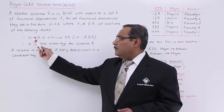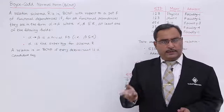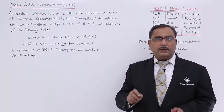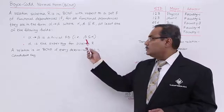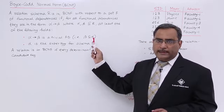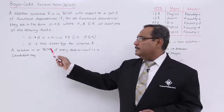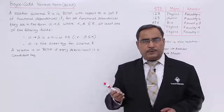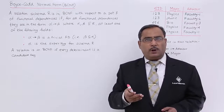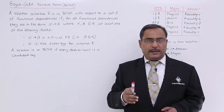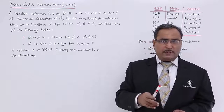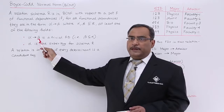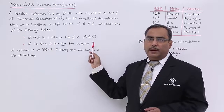Issue number 1: alpha produces beta is a trivial functional dependency. Trivial functional dependency means alpha determines beta, but beta is a subset of alpha — if that holds good, it is a trivial functional dependency. Otherwise, issue number 2: alpha is a super key for schema R. A super key is a combination of one or more attributes with which you can uniquely identify a tuple in a table.